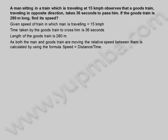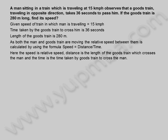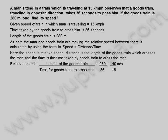As both the man and goods train are moving, the relative speed between them is calculated by using the formula: speed is equal to distance by time. Here the speed is relative speed, distance is the length of the goods train which crosses the man, and the time is the time taken by goods train to cross the man.